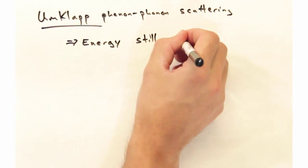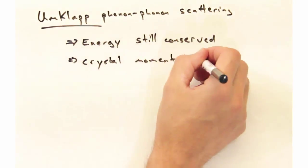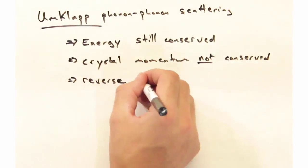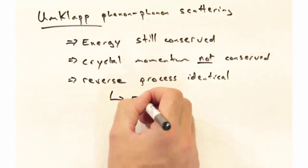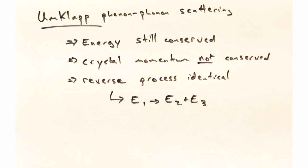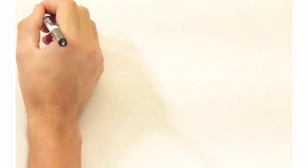So things to remember about umklapp scattering: the energy is still going to be conserved, crystal momentum is not conserved, and I've demonstrated this for the phonon plus phonon combining together to create a new phonon, but the reverse process is identical in that you can have one phonon decay into two phonons, plus a reciprocal lattice vector.